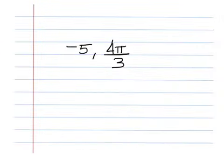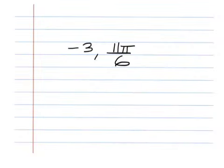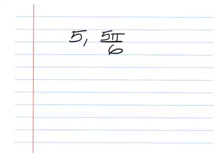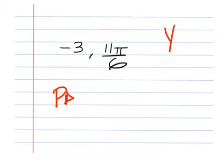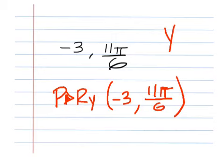Example number 4: what is the Y value of this problem? The answer is negative 0.4. Practice number 3: you're searching for Y in the rectangular coordinate system. Bonus number 5 — the answer should be 0.2. Solution for practice number 3: we're looking for Y, so you need polar to rectangular Y. Type in negative 3 comma 11π over 6.